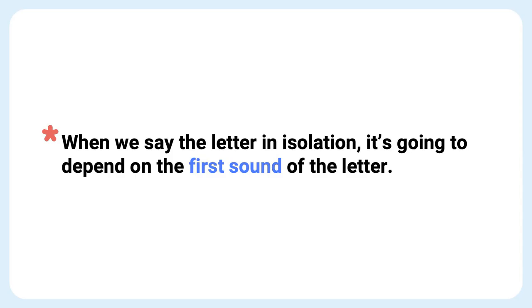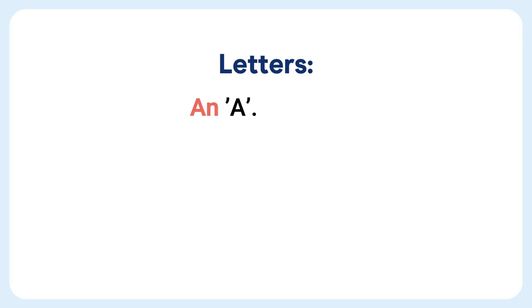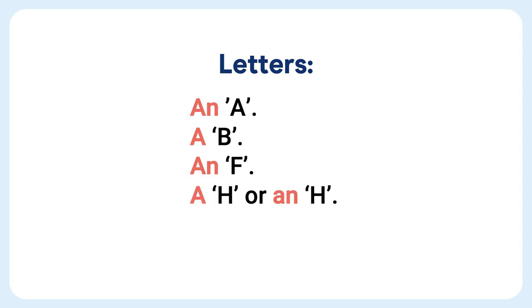Finally, we have letters. When we say a letter in isolation, it depends on the first sound of that letter. For example, we have 'an A' and 'a B.' But then we have a consonant like F — so it's 'an F,' because the first sound is a vowel sound. Depending on what country you're in, you may hear 'a H' or 'an H' — both can be correct. Other examples might be 'an S' or 'an X.'